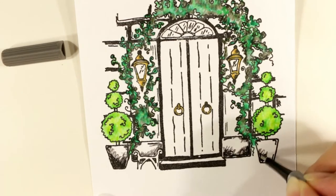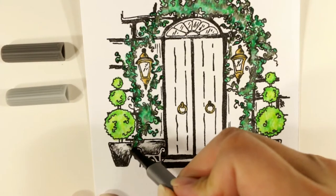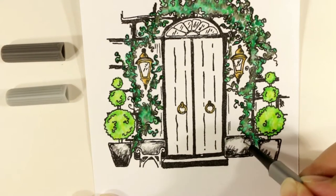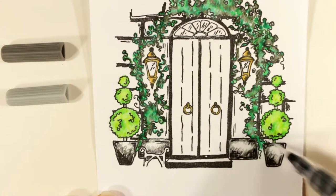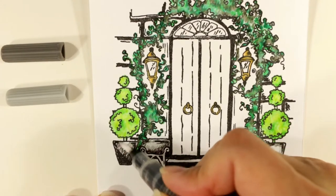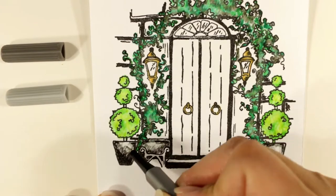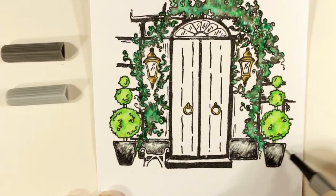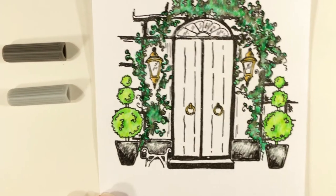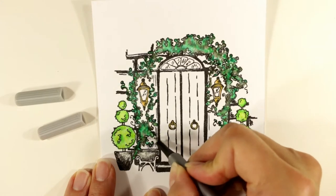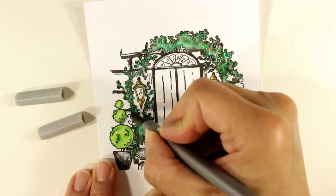Now I'm going through and using a mid-tone gray and then a lighter gray to color in what I was thinking would be kind of stone work. This is the bottom pediment around either side of the door. And then the pots for the topiaries. And I'm just blending that out together.